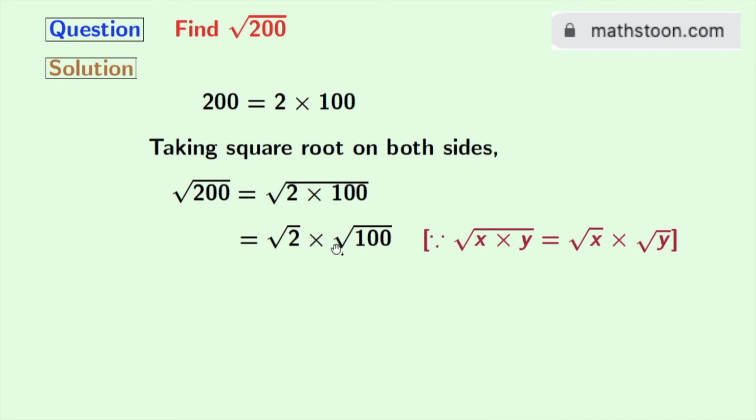Now as root 2 cannot be simplified further, so we will keep it same and root 100 is equal to 10. After multiplying this we get 10 root 2, and this is the value of square root of 200.